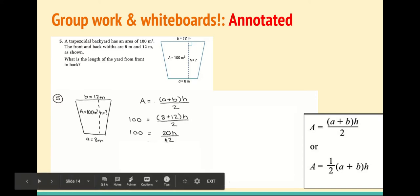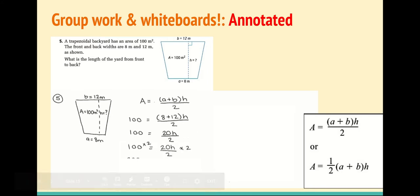Or you could multiply both sides by 2. In this case, that's what I did. I would get 200 equals 20H, and then you would divide by 20, and then H is equal to 10.